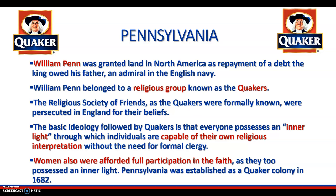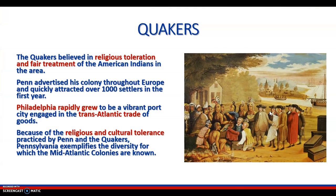Pennsylvania. William Penn was granted land in North America as repayment of a debt the king owed his father, an admiral of the English Navy. William Penn belonged to a religious group known as the Quakers — formally the Religious Society of Friends — who were persecuted in England for their beliefs. They believed that all individuals possess an inner light, in which individuals are capable of their own religious interpretations without need for formal clergy. Women were also afforded full participation in faith. Quakers believed in religious toleration and fair treatment of the American Indians. Philadelphia rapidly grew as a vibrant port city engaging in transatlantic trade. Because of the religious and cultural tolerance practiced by Penn and his Quakers, Pennsylvania exemplified the diversity for which the mid-Atlantic colonies are known.